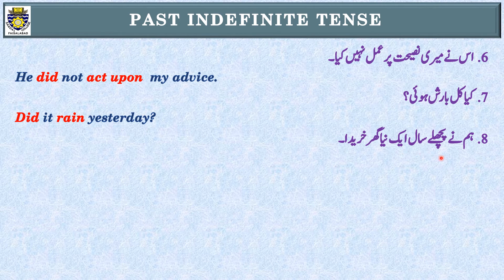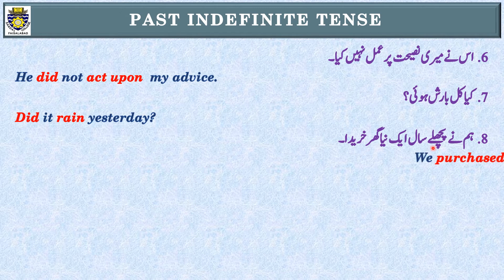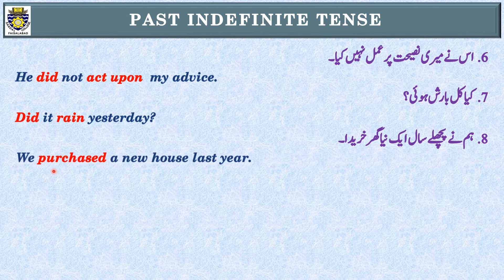Sentence number eight: 'We purchased a new house last year.' First step: identification of tense — past indefinite tense. Second step: the subject is 'we.' Simple sentence: 'We purchased a new house last year.'